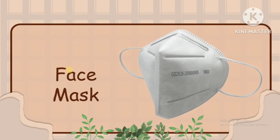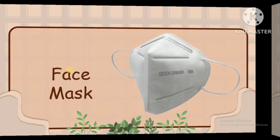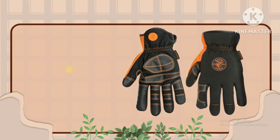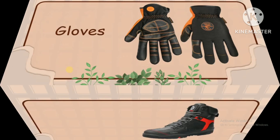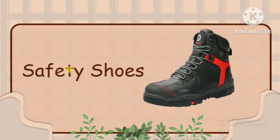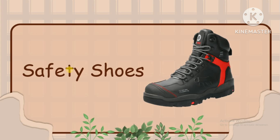Face mask is used to protect the nose and mouth from viruses, dust, and chemicals. Gloves generally protect against dirt, chafing, and abrasions, and are used for protection against electrical hazards. Safety shoes are designed to protect the foot from physical hazards such as falling objects, stepping on sharp objects, heat and cold, wet and slippery surfaces, exposure to corrosive chemicals, and also from electrical hazards.